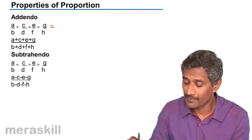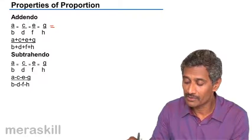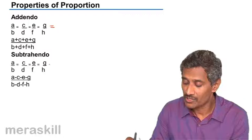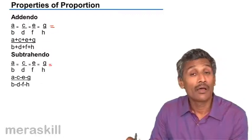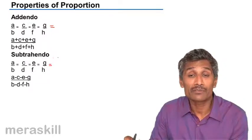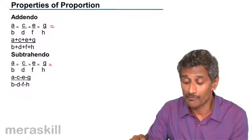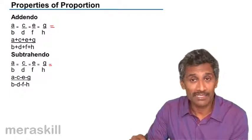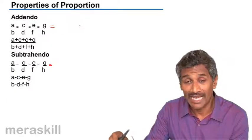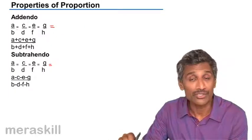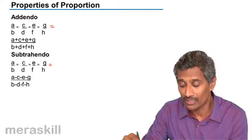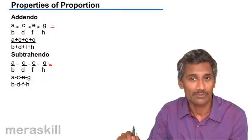And subtrahendo, we have A/B equals C/D equals E/F equals G/H. This should not be mixed up with compound ratio. When you multiply all the antecedents and all the antecedents divided by the product of the consequents, that new ratio is not equal to each of these ratios. This is valid only in case of addition or subtraction.